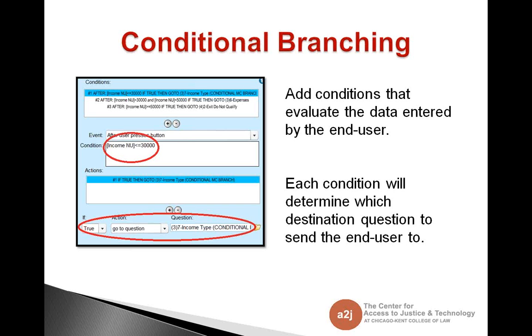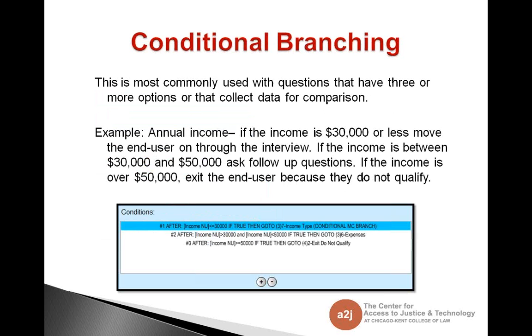With conditional branching, you add conditions that evaluate the data entered by the end user. Each condition then determines where to send the end user based on the information they entered. And here, we have the two most commonly used forms of conditional branching, using it with questions that have three or more options, or questions that collect data that needs to have some kind of comparison going on. So for example, here, the question was about annual income. And this can be a sample for online intake if you have a means test for whether or not your legal aid organization can help an end user. You can ask them what their annual income is. Here in this example, I have the condition, if it's $30,000, they qualify and move on. If it's between $30,000 and $50,000, you want to ask follow-up questions like, what are your expenses like? How many children do you have? If the income is over $50,000, you can exit them right out of the interview because they don't qualify.